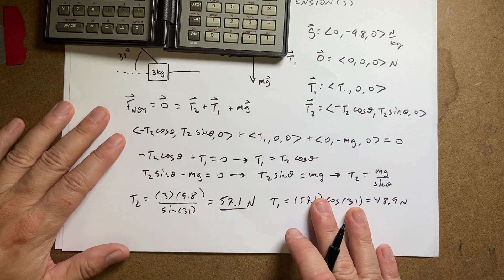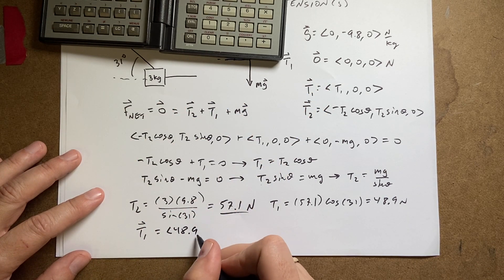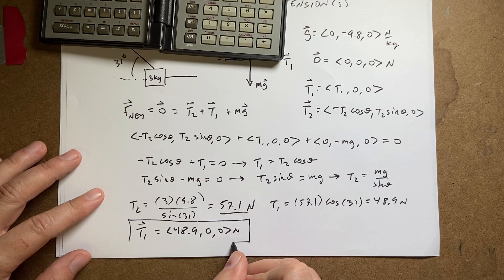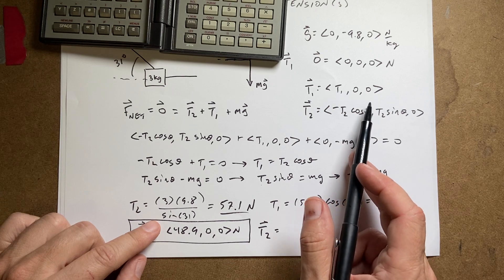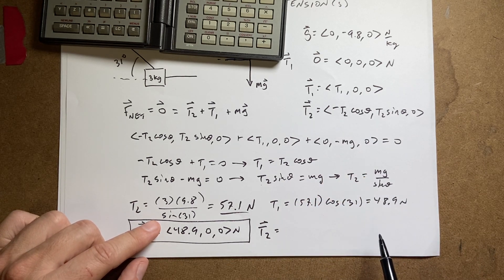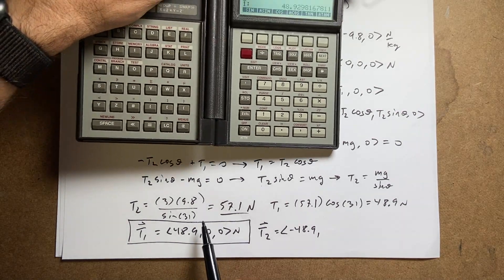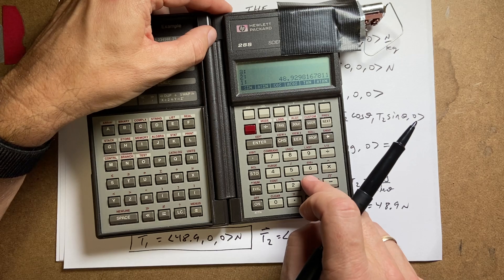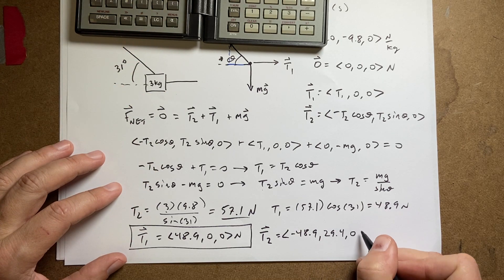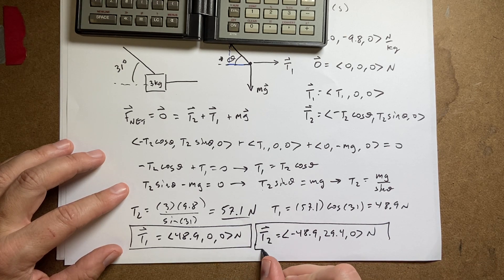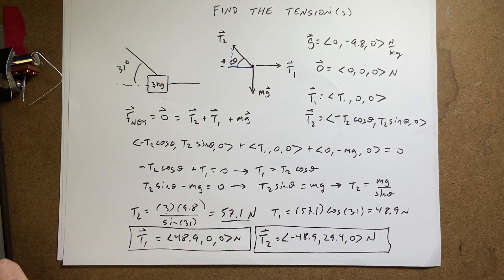Now if I want to write these as full vectors: the T1 vector is (48.9, 0, 0) newtons — put a box around it, it's not a final answer if you don't box it. T2 as a vector: the x component is negative 48.9, and the y component is T2 sine theta, which is just 3 times 9.8 equals 29.4. So T2 equals (−48.9, 29.4, 0) newtons. Put a box around it because it's the final answer — and that's how you get final answers. And there you go, that's your answer to the whole problem.